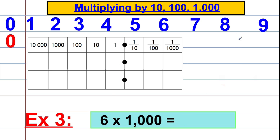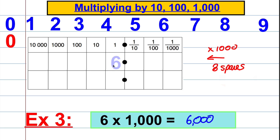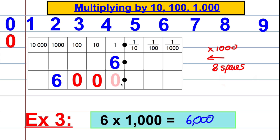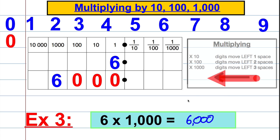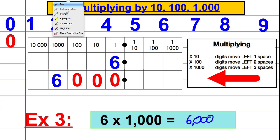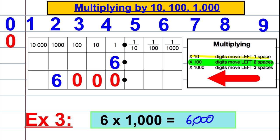Now we're doing 6 multiplied by 1,000. We would guess that when multiplying by 1,000, we shift left by three spaces — and indeed 6 multiplied by 1,000 is 6,000. We have 6 ones originally, and the 6 moves 1, 2, 3 places, giving us 6,000, with placeholders for no hundreds, no tens and no ones. So the rule is: multiplying by 10 — move digits one space left; multiplying by 100 — move digits two spaces left; multiplying by 1,000 — move digits three spaces left.